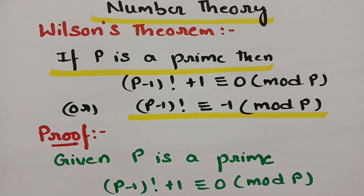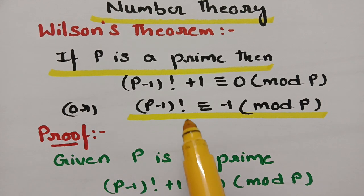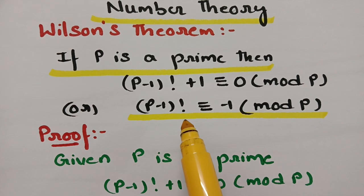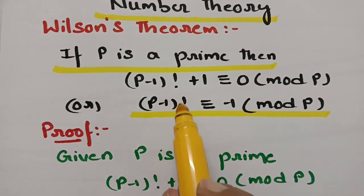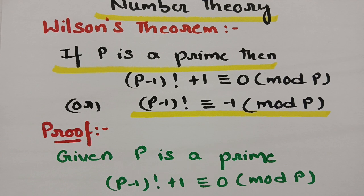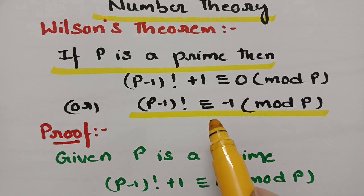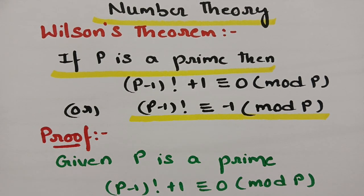Let me tell you the difference between Fermat's theorem and Wilson's theorem. In Fermat's theorem we talk about powers — for example, what is the remainder when 2^50 is divided by 17? So Fermat's theorem is used when a larger number is divided by a prime to find the remainder. In Wilson's theorem, if there are any factorials, we check whether a prime number divides the larger number — it is only about divisibility, not finding the remainder.